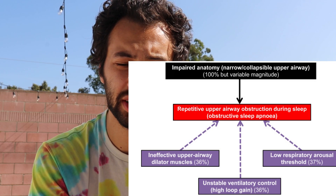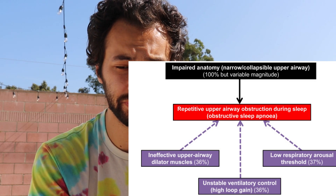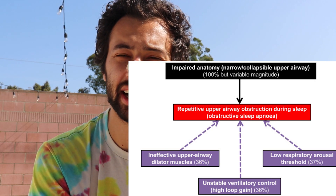Another non-anatomical cause is ineffective upper airway dilator muscles — your muscles are just ineffective for one reason or another, maybe they're weak or you haven't been using them properly. So even when I finish these surgeries, it's possible I'll need further treatment. But luckily there are some answers for a few of these.